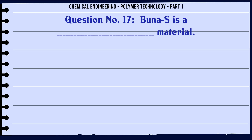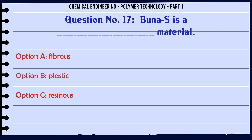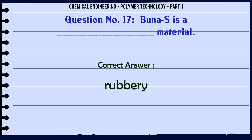Buna S is a material of what type? A. Fibrous, B. Plastic, C. Resinous, D. Rubbery. The correct answer is Rubbery.